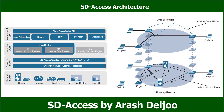An automated underlay eliminates misconfiguration and reduces network underlay complexity. It also greatly simplifies and speeds up building the network underlay. A downside to an automated underlay is that it does not allow manual customization for special design requirements. As a summary, for underlay configuration we have two choices: manual underlay and automated underlay.